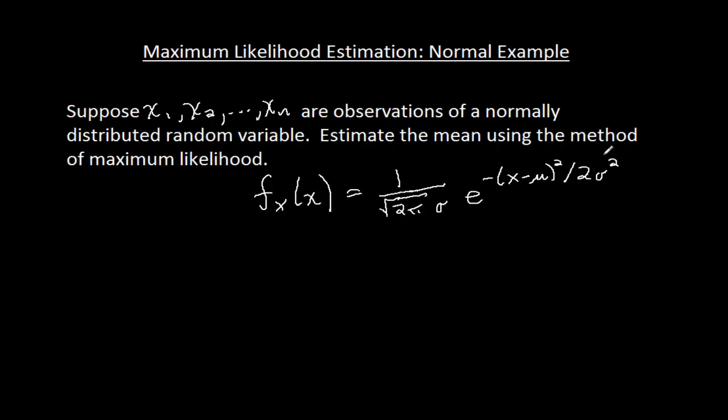And I forgot to mention, this example is very close to what's done in the text. In the text, I do an example of maximum likelihood for the normal distribution, finding the mean, but I give you actual numerical observations. Here, I'm just letting these parameters represent my observations.